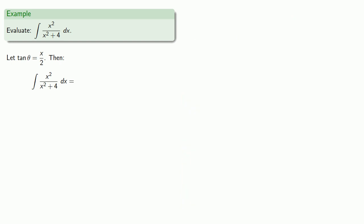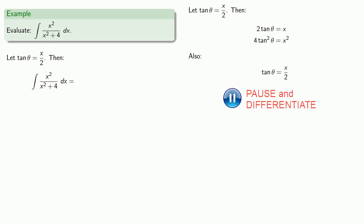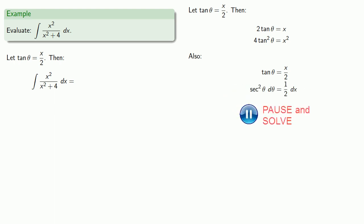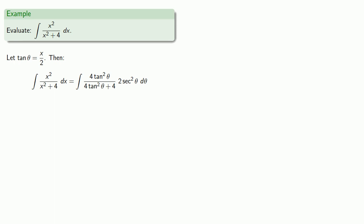We'll let tangent of theta equal x over 2. At this point, we're going to do a lot of algebra and a lot of trigonometry and very little calculus. If we let tangent of theta be x over 2, then we find x is equal to 2 tangent theta, and so x squared is 4 tangent squared theta. We also need to do something about this differential: if tangent of theta is x over 2, then differentiating gives us dx equals 2 secant squared theta d theta. We'll make a bunch of substitutions. This rather horrible mess can be simplified because we have the fundamental trigonometric identity relating tangent and secant: tangent squared plus 1 equals secant squared. But we don't have tangent squared plus 1 — we have 4 tangent squared plus 4, and we can do a little algebra.